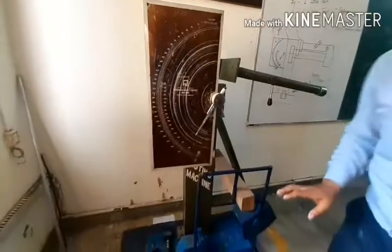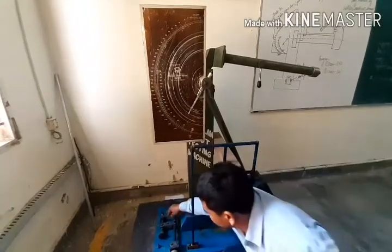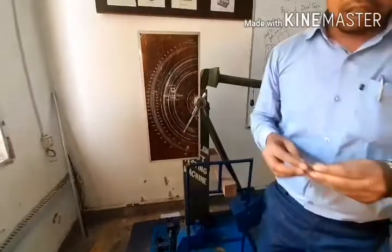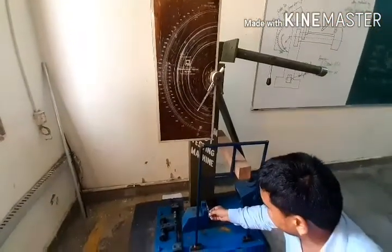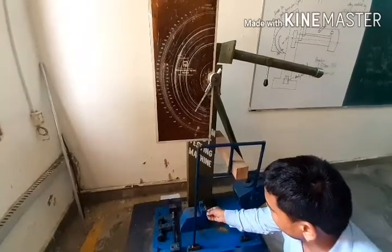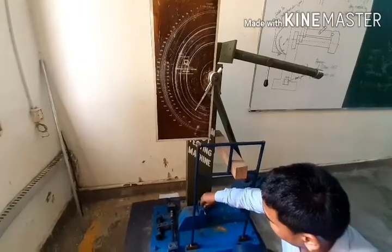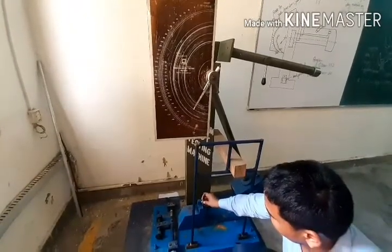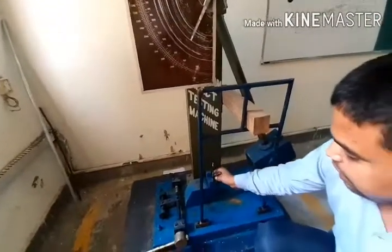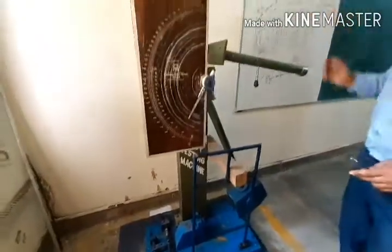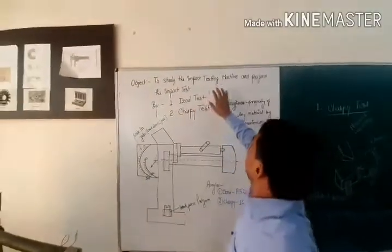Now let's talk about the specimen. For the specimen, we have a table. We have two components of the specimen. For the Charpy test, we put a striker in the V-notch, on the opposite side. For the Izod test, the specimen is vertical and the V-notch will be used on the front side.